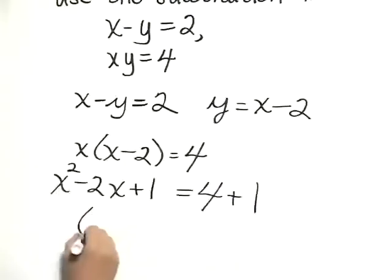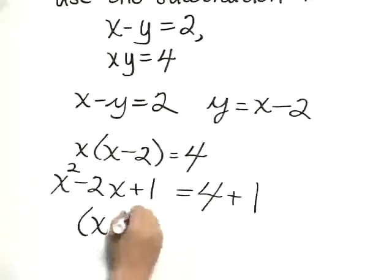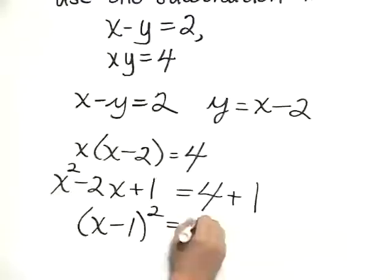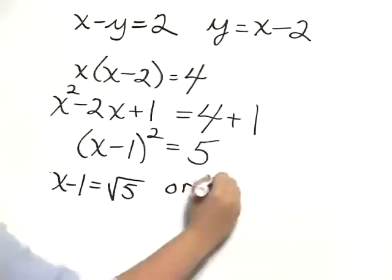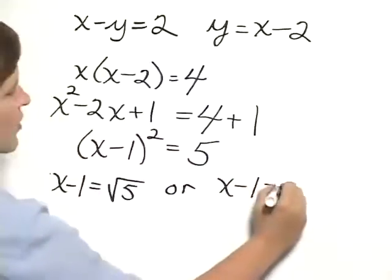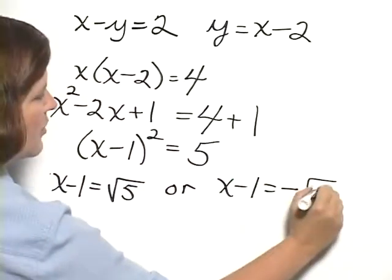And that gives me x minus 1 squared equals 5. Now using the principle of square roots, I would have x minus 1 equals the square root of 5, or x minus 1 equals the opposite of the square root of 5.